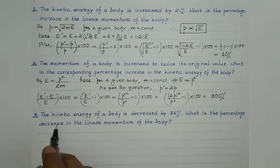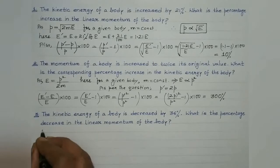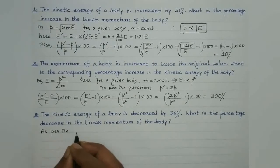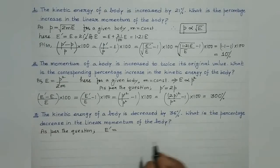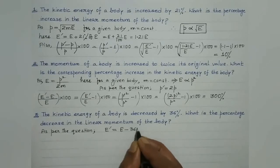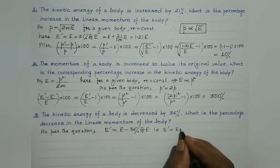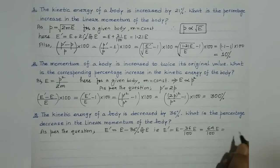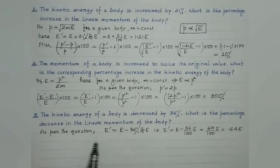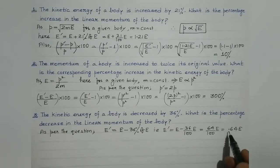Third question: the kinetic energy of a body is decreased by 36%. What is the percentage decrease in the linear momentum? As per the question, new kinetic energy E dash equals E minus 36% of E, which gives 64/100 of E, or 0.64E. So 64% of the original kinetic energy remains.